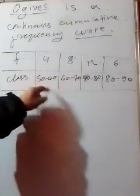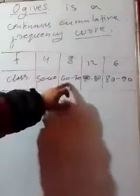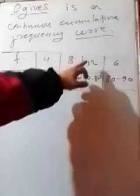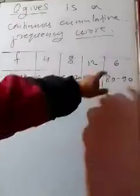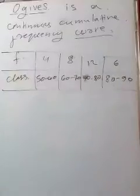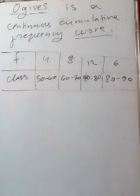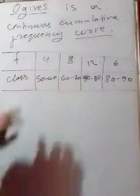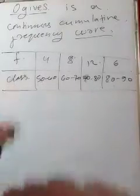Here 4 students got 50 to 60 marks. 8 students got 60 to 70 marks. 4 students got 70 to 80. And 6 students got 80 to 90 marks. So this is the number of students. Now with the help of this, you can make a cumulative frequency table.